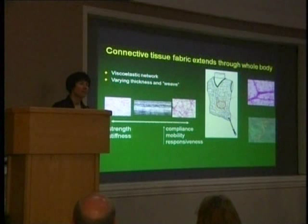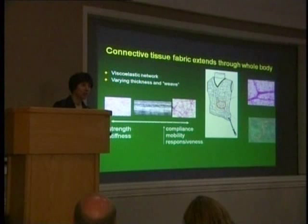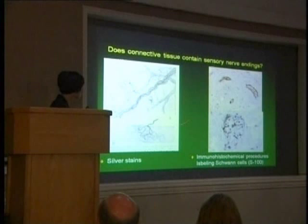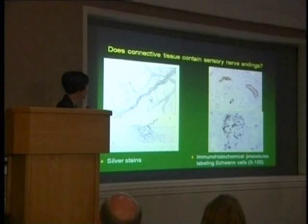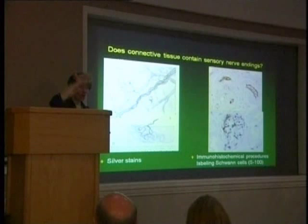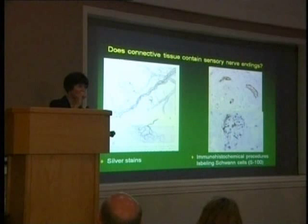One of the questions we've wondered is: we know that sensory nerves run through connective tissue, but is connective tissue actually innervated? Do sensory nerves end in connective tissue and transmit sensation from it? One of my graduate students started working on this, and she reviewed the literature. She found very little evidence of actual sensory nerve endings terminating in connective tissue. She saw some silver stains in the old literature and some more recent immunohistochemical representations, but 100% of what she found was in cut tissue sections of 5 or 10 microns. So how do you know something that looks like an ending wasn't just a cut end?